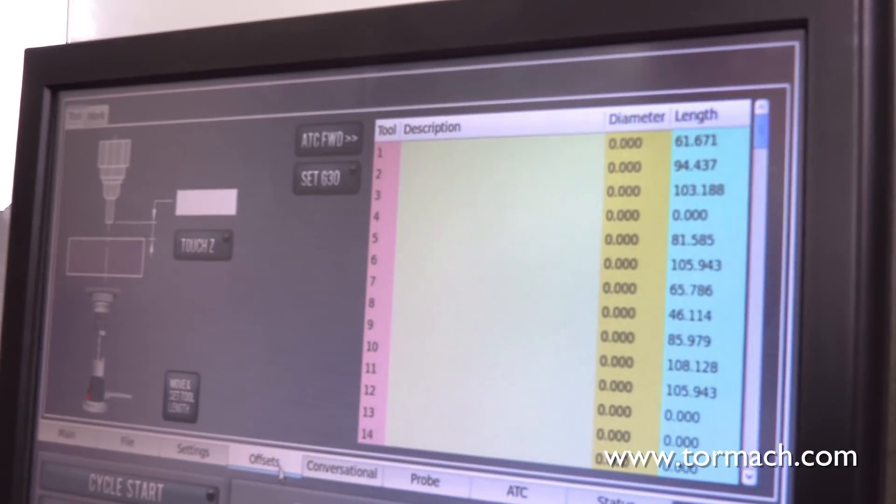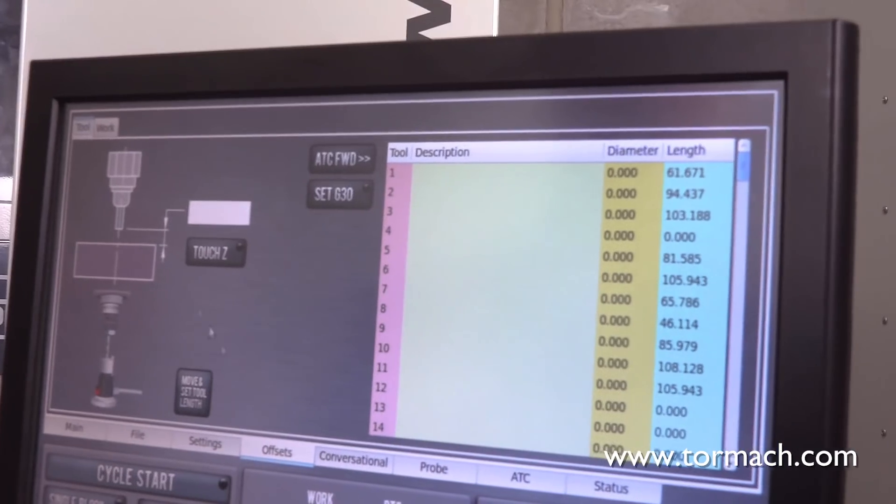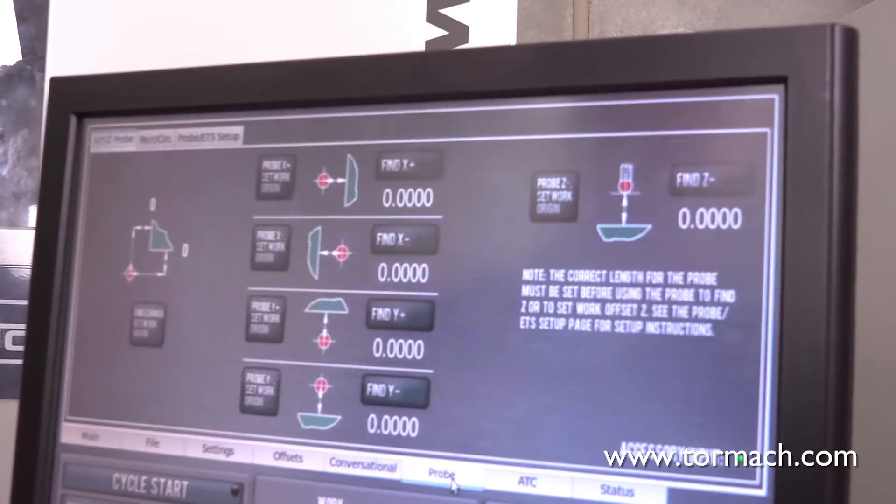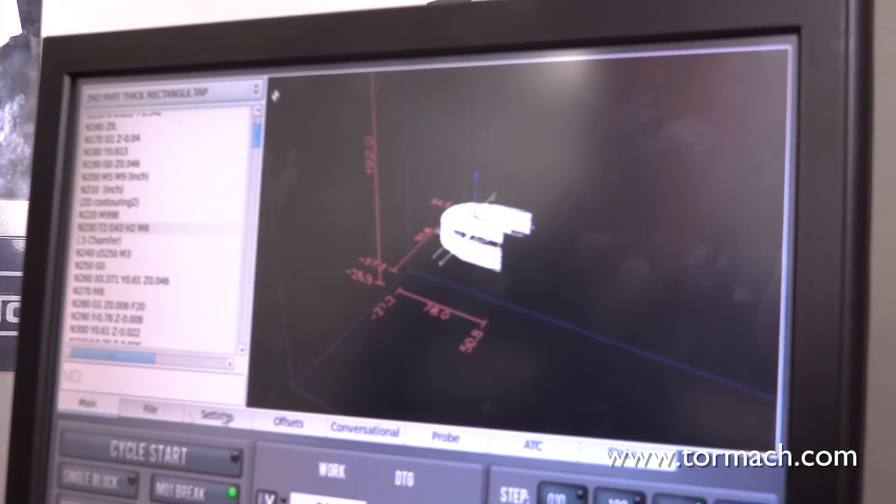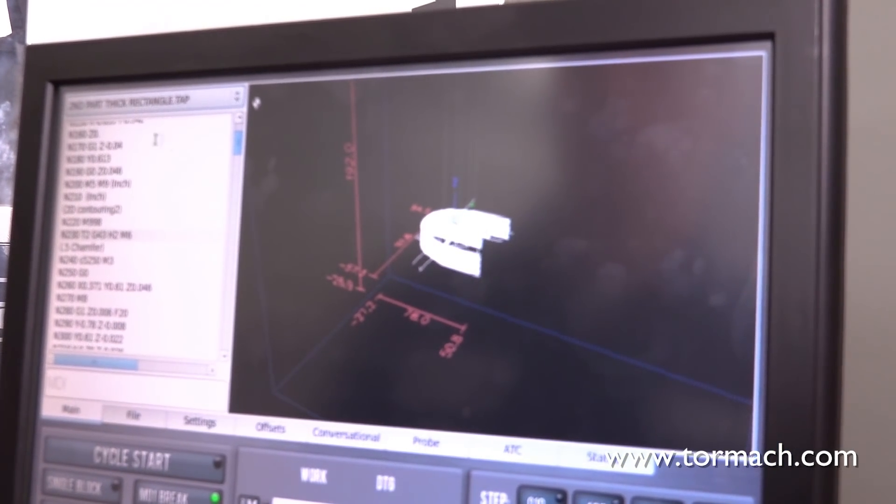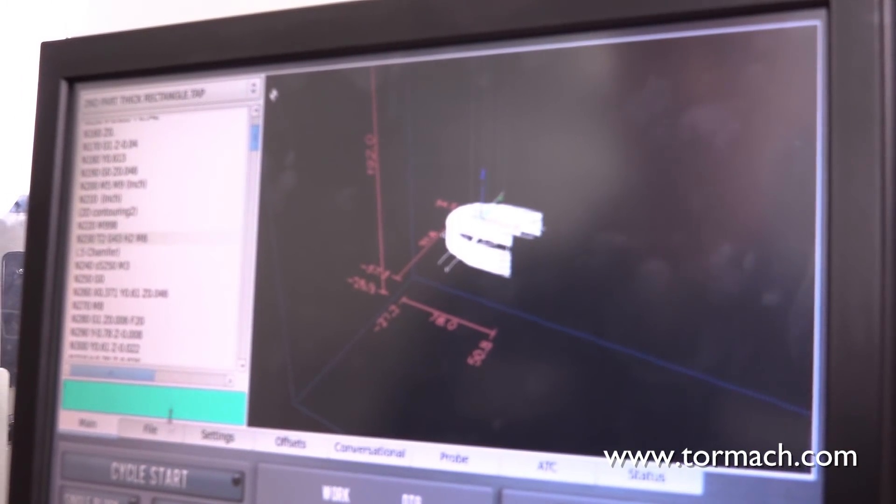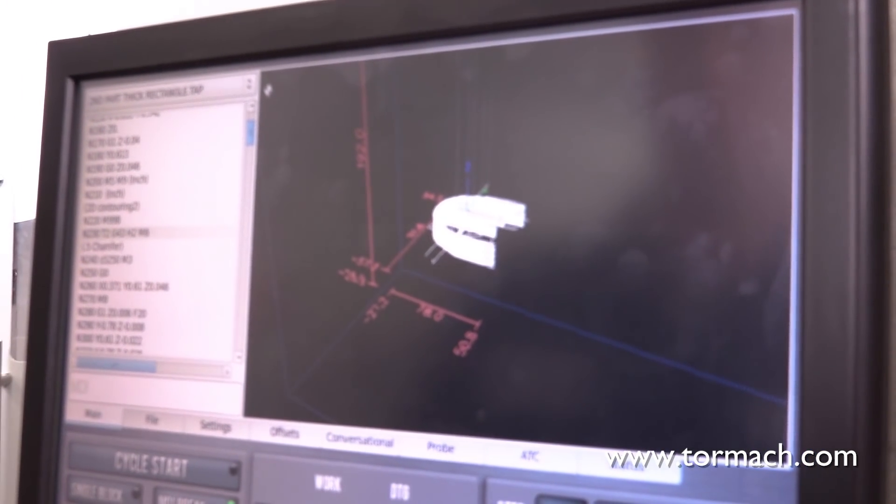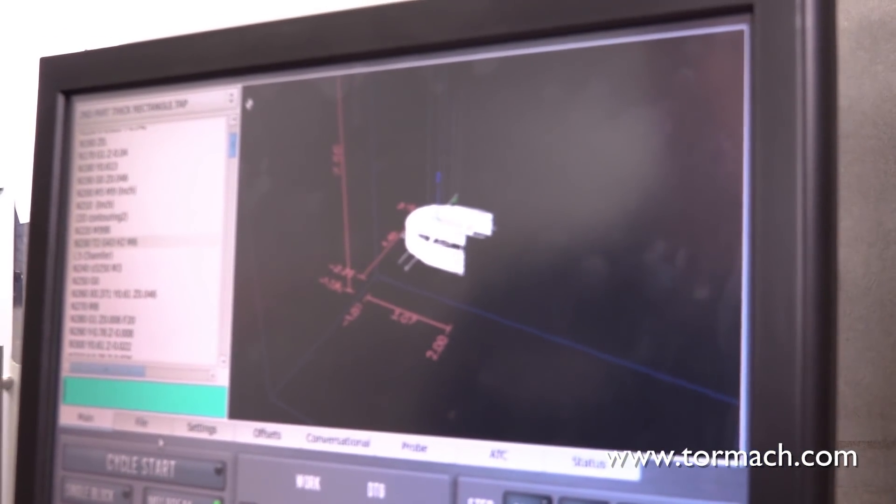The rest of these screens are covered in detail in other videos. We've got a long video on tool and work offsets. There's another video on the conversational screens. There's a video on probing. So I just wanted to cover the basics today. We talked about G-code files. We talked about the MDI line. We talked a bit about the program control group. I'll go ahead and bring this back into inch units.